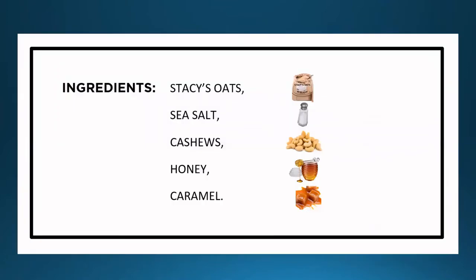I get these fantastic oats from the farmer's market — Stacy's Oats. I have no idea what's in them, but they're tastier than just raw oats. I use some very locally sourced sea salt, some cashews right off the tree, some honey cultivated by the finest of my local bees, and I also buy some caramel from the confectionery stand at the farmer's market. So these are my ingredients.